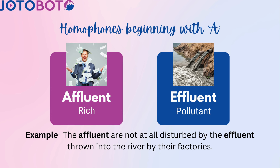A-F-F-L-U-E-N-T: 'affluent' means rich. A-F-F-L-U-E-N-T: 'effluent' means pollutant. The affluent are not at all disturbed by the effluent thrown into the river by their factories.